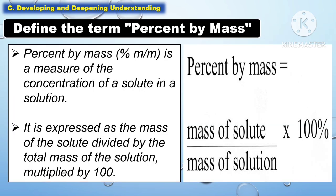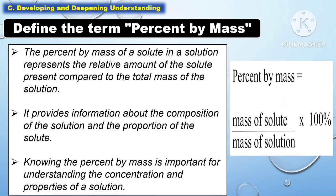In developing and deepening understanding, we are going to define the term percent by mass. Percent by mass is a measure of the concentration of a solute in a solution, and it is expressed as the mass of the solute divided by the total mass of the solution multiplied by 100. The percent by mass represents the relative amount of the solute present compared to the total mass of the solution, providing information about the composition and proportion of the solute.